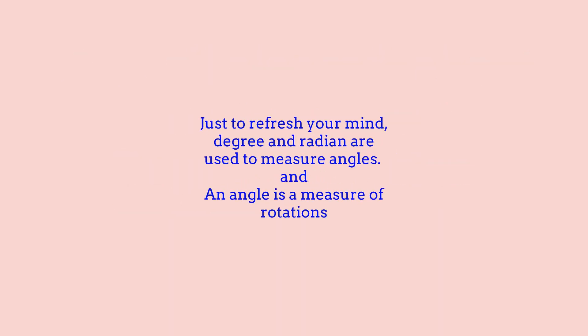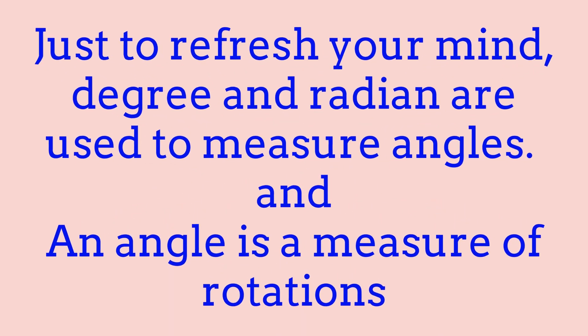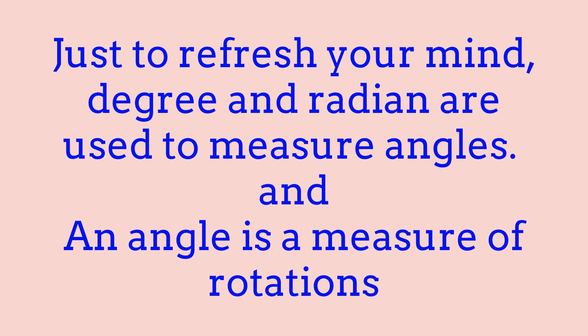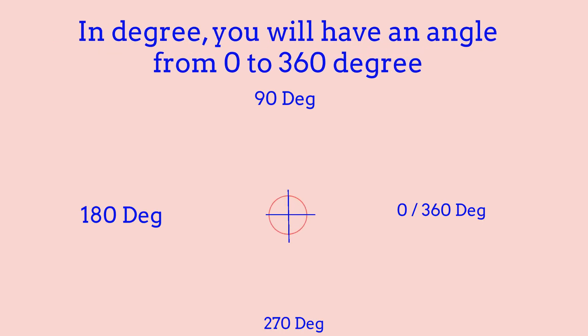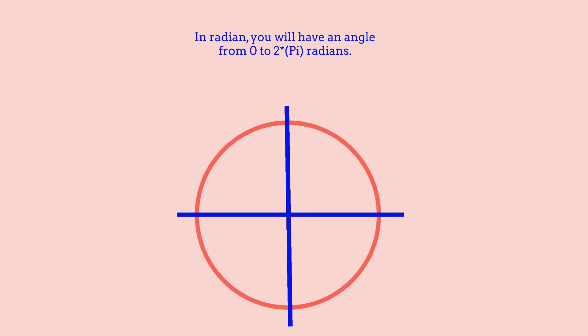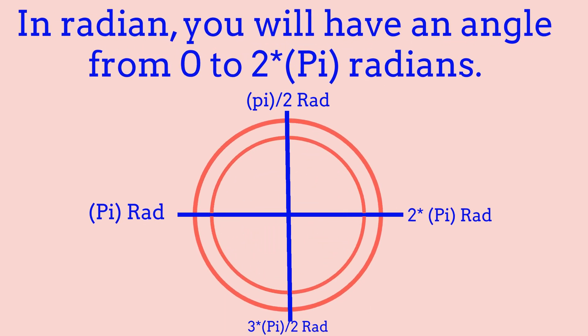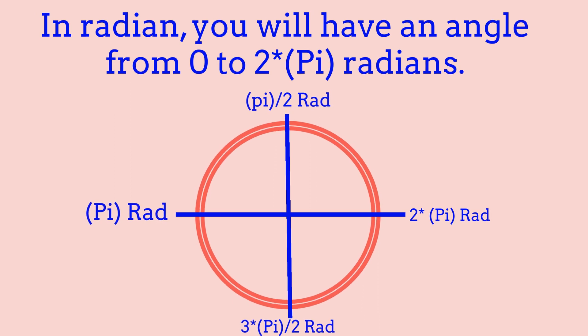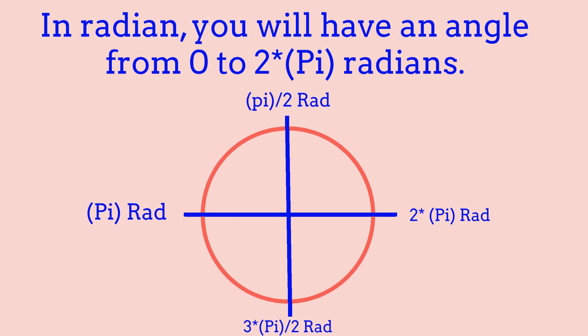Just to refresh our minds, degrees and radians are used to measure angles, and an angle is a measurement of rotation. In degrees, you'll have an angle anywhere between 0 and 360 degrees, and in radians, you'll have an angle from 0 to 2 pi radians. Scientists, programmers, and even engineers often use angles measured in radians, because the majority of people find it more effective compared to degrees.